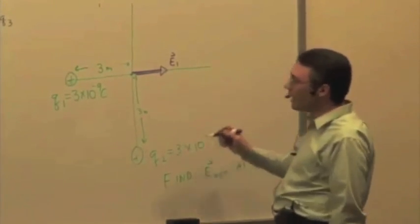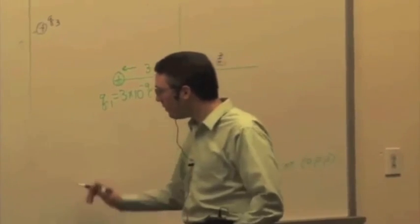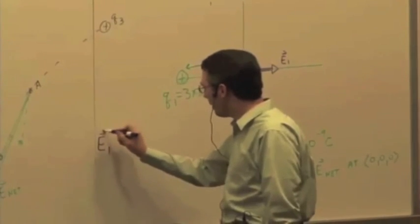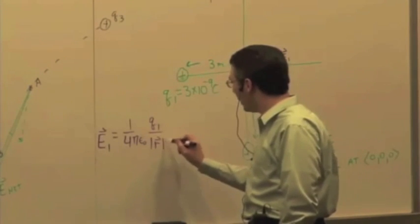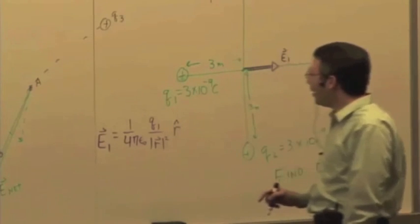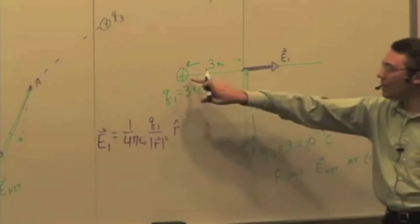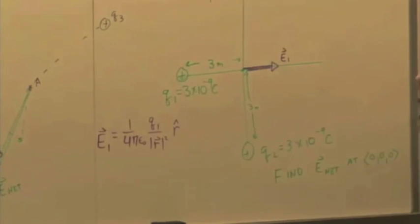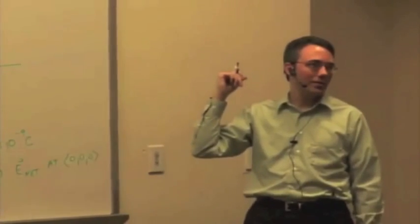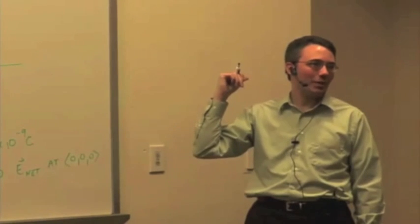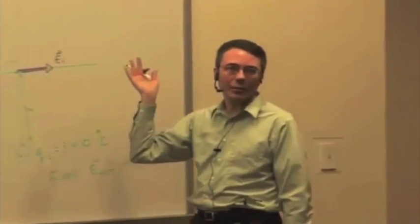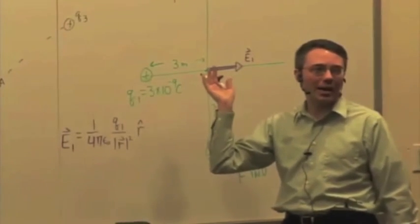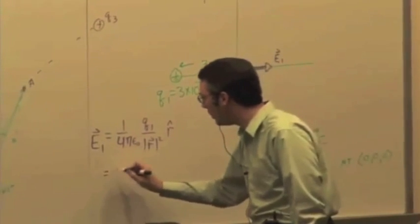And we could quickly calculate this without having to do too much mathematics, because we know E1 is 1 over 4 pi epsilon 0, Q1 over R squared times R hat. Well, what's R hat? What's the vector that points from the source to the observation location that lies along the positive x-axis? A unit vector pointing in the plus x direction is I, right? Or the components of I are 1, 0, 0.